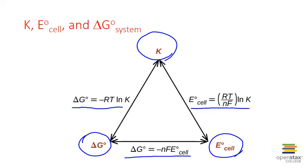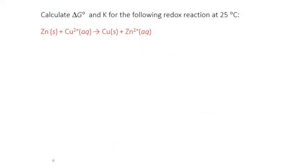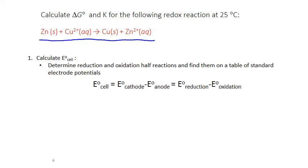We can answer questions about Gibbs free energy changes and equilibrium constants for any redox reaction. For example, let's figure out the standard Gibbs free energy change and the equilibrium constant for this reaction between solid zinc and copper ion in solution. Our first step is to figure out the standard electrochemical cell potential using reference electrode potentials for the reduction and oxidation half reactions. We have to identify the reduction and oxidation half reactions and find them on a table of standard electrode potentials, then subtract cathode minus anode to get our standard electrochemical cell potential.